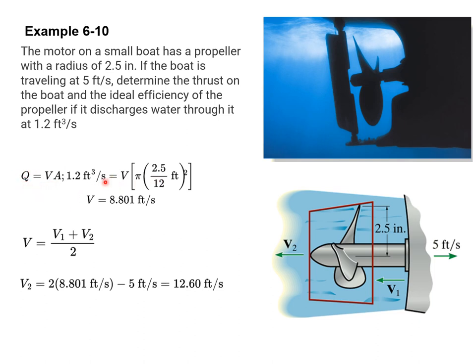We know the area, so Q equals V times A. We can find the velocity of the fluid, 8.801 feet per second. We can then use Freud's theorem. This is V near the propeller is V1 plus V2 over 2. We know what V is. We're told what V1 is, which is 5 feet per second, so we can solve for V2, which is 12.60 feet per second.